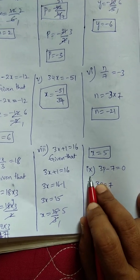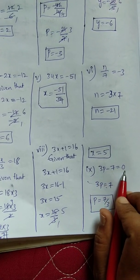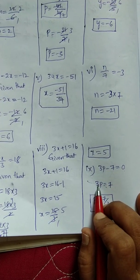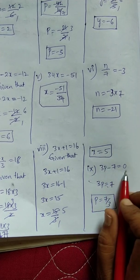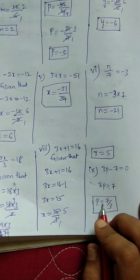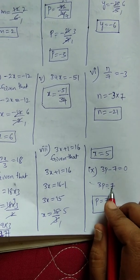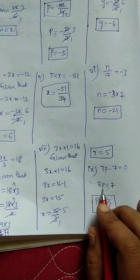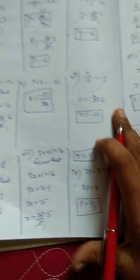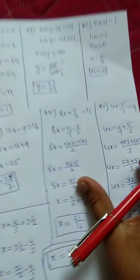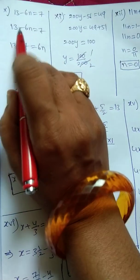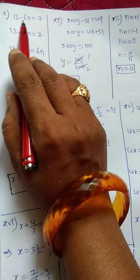Next, 9th bit: 3p minus 7 equals 0. So 3p equals — transpose of minus 7 becomes plus 7. Therefore p equals 7 by 3 — transpose of multiplication gives division.